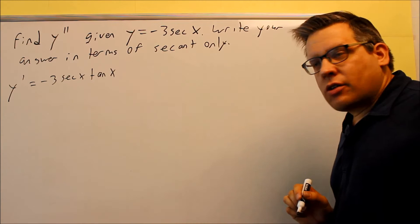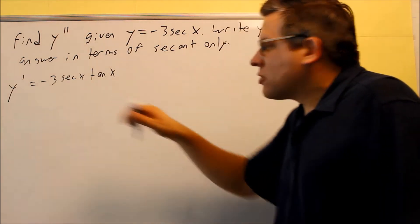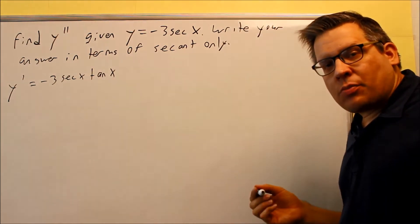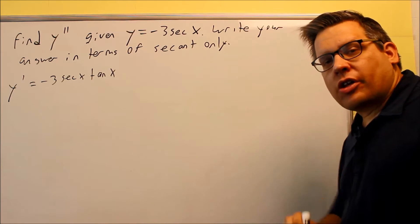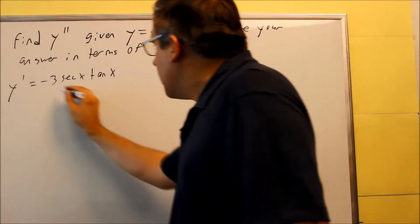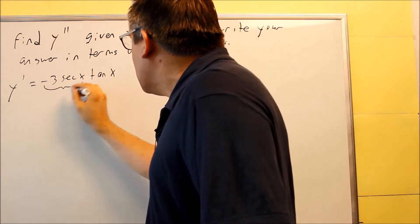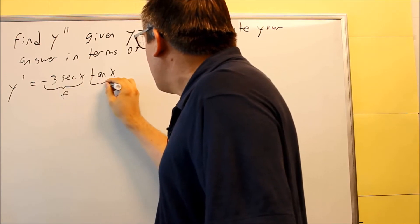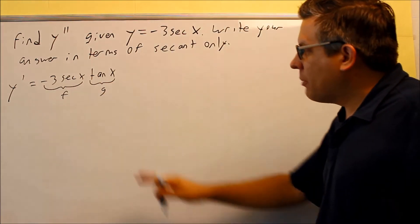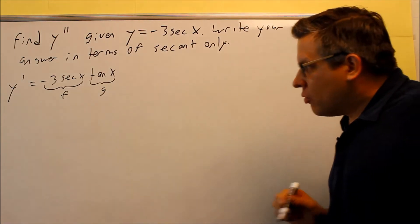Now I want to find the second derivative. I have things multiplied together, which means I'm going to have to use a product rule. So product rule, you usually only have two terms. We have three here. So what I'm going to do is I'm going to say that the first term is f, the second one is g, and I'm going to proceed with the product rule.